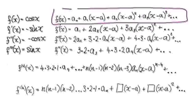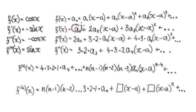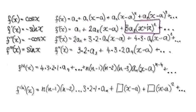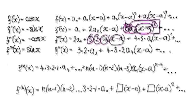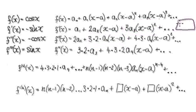So you start out with this general series. Differentiating it gives you the first derivative. Differentiating again: the constant a1 disappears, and the next term gives you 2 times a2. For the cubic term, the 3 stays, the 2 comes down, a3 stays, the bracket stays, and the power reduces — giving you 3 times 2 times a3 times (x minus a). The derivative of the bubble is 1, so it stays the same. Continuing this pattern gives you the second and third derivatives.